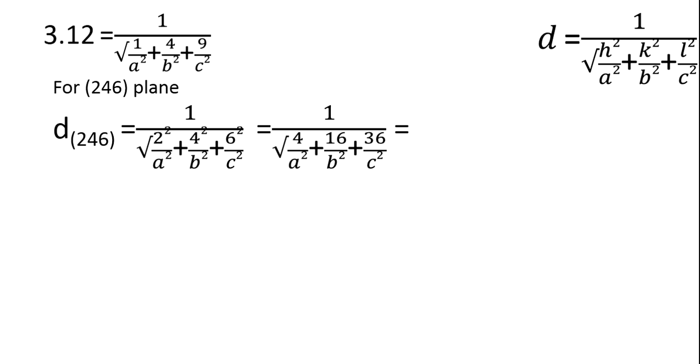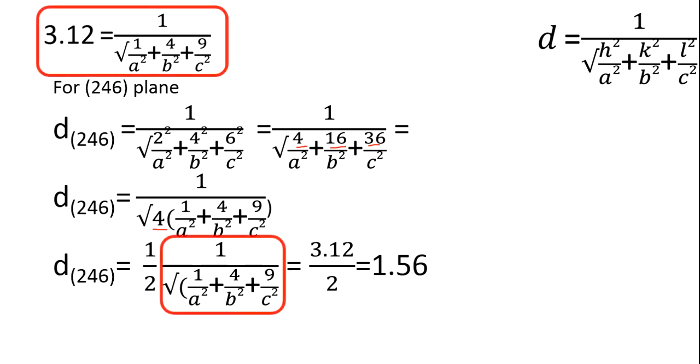Taking the square, we'll be getting 4, 16, and 36 here. There is a common multiple which is 4, so we can take 4 out. We write like this, then we'll be getting 1, 4, and 9. Taking the root of 4, we'll be getting 1 by root 2.